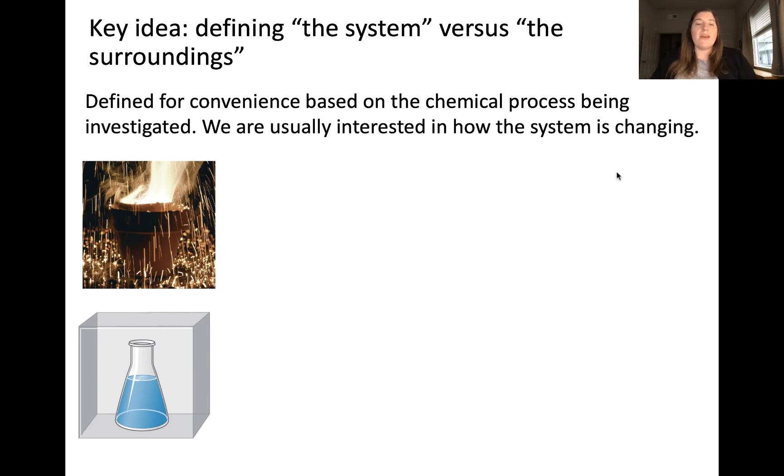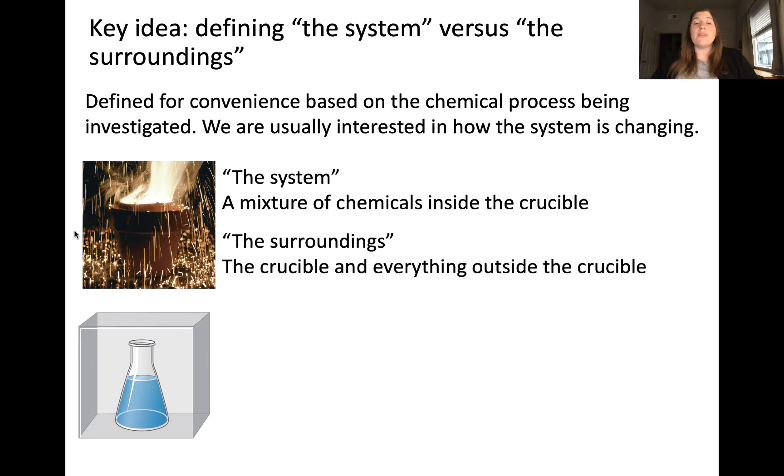For example, we may be interested in a reaction that occurs in a metal crucible shown in this picture on the left. We can define the system as the mixture of the chemicals inside the crucible that are reacting. This would mean the surroundings would be everything else, including the crucible and everything outside of the crucible.